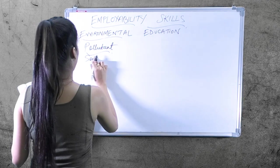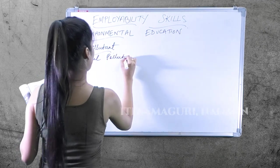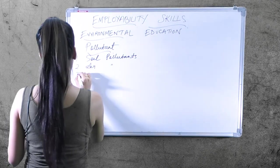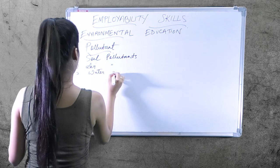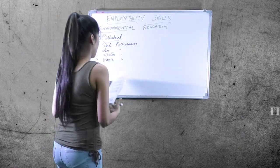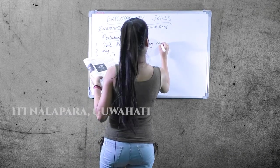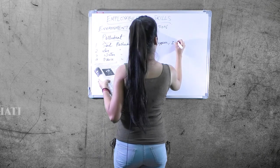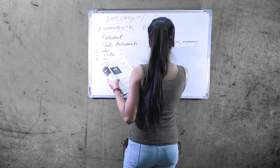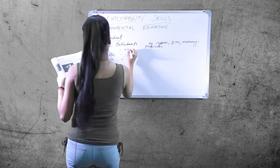Types of pollutants: number one is soil pollutants, number two is air pollutants, number three is water pollutants, number four is noise pollutants. Examples of soil pollutants include copper, zinc, mercury, pesticides, etc. Air pollutants include carbon monoxide, nitrogen oxide, etc.